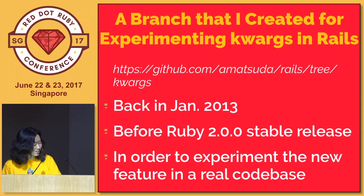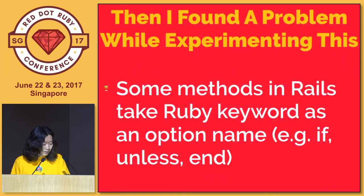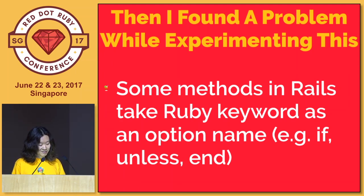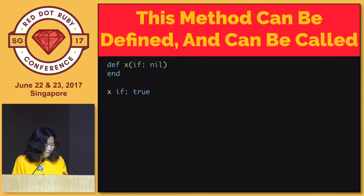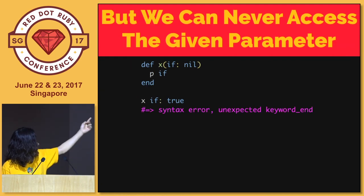I created a branch introducing keyword arguments to the Rails code base four years ago before Ruby 2 release. But I found some specification problems. Rails very often defines a method key that is exactly like a Ruby keyword, like validate :if, validate :unless, et cetera. With keyword arguments, such a keyword argument can be defined and called, but you can never access that variable - it causes a syntax error. So now we can create a never-can-access variable in Ruby.